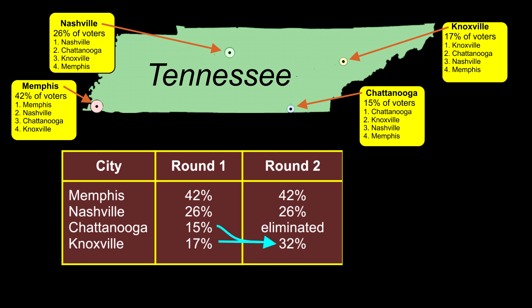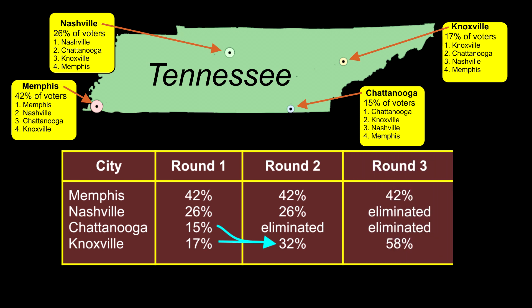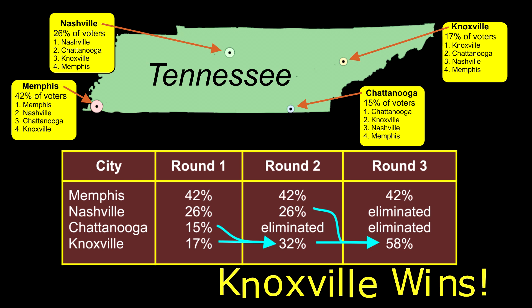Again, no city has more than 50%, which means that instant runoff voting requires another round of vote shuffling. In this round, the city with the lowest number of votes is Nashville. Instant runoff voting therefore eliminates Nashville and tries to count its second place votes, which was for Chattanooga. Unfortunately, Chattanooga has already been eliminated, and the algorithm has to count Nashville's third place votes, which are for Knoxville.